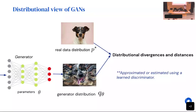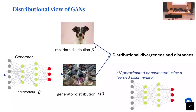To recap: you have an implicit model. You want to make it minimize a distributional divergence or distance, but you can't — for the KL, we don't have likelihoods; for the others, it's intractable or hard to optimize. So we approximate using a learned discriminator. If you want to think about GANs in one slide, that's it.